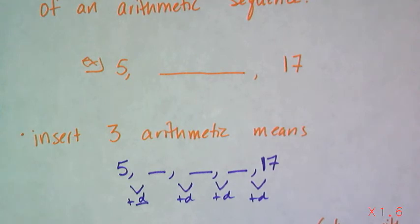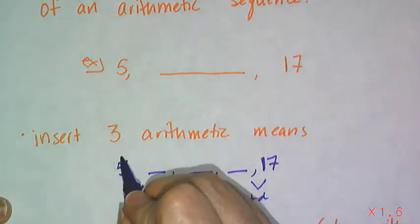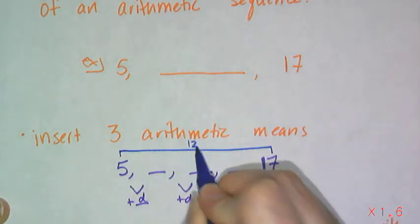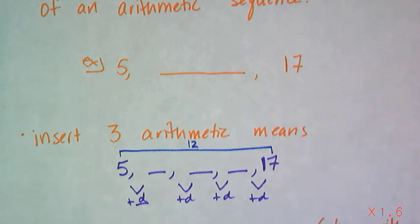What's the difference between 5 and 17? Well, this is a jump of 12 units that need to be broken up into 4 pieces. So that gives you that this d is equal to 3, so you get 8.